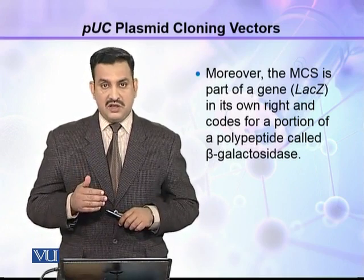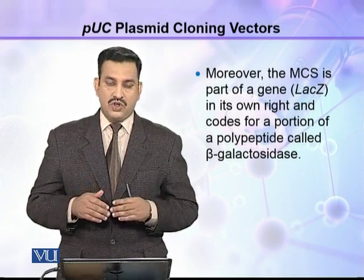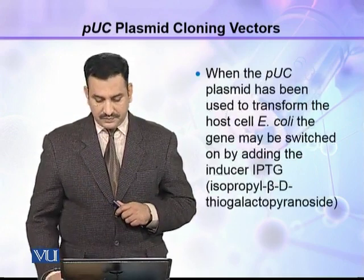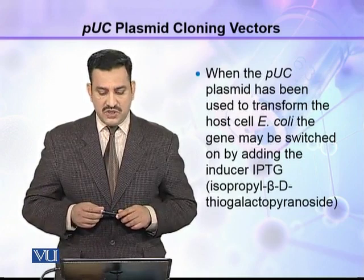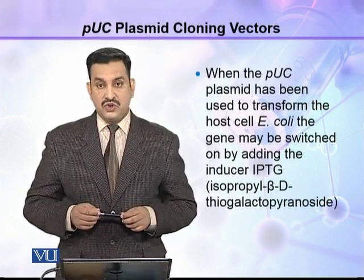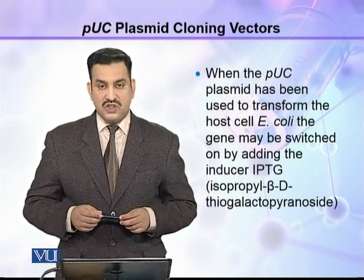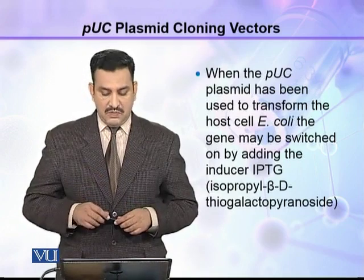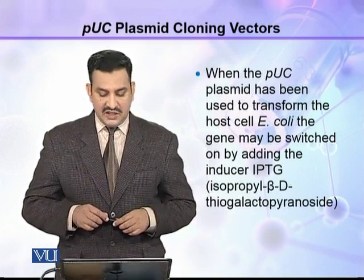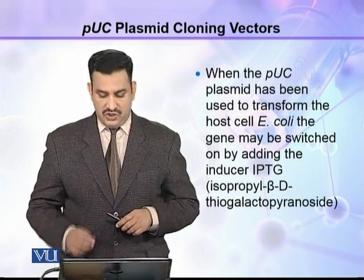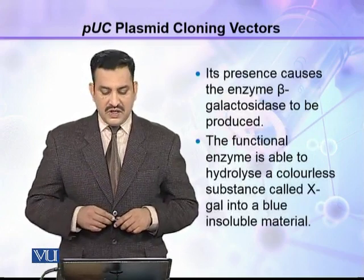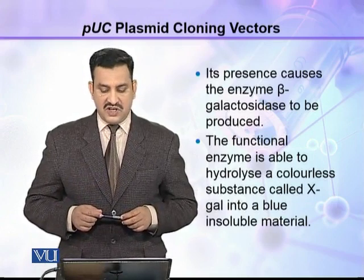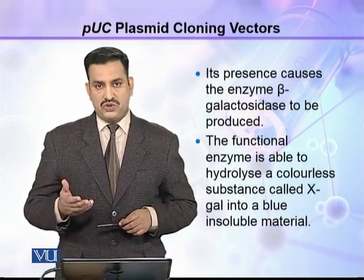This lacZ codes for beta-galactosidase. When the PUC plasmid has been used to transform the host cell E. coli, the gene may be switched on by adding the inducer IPTG. Its presence causes the enzyme beta-galactosidase to be produced.